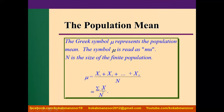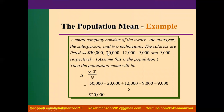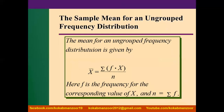For population mean, there is no change except the symbols. We use mu (μ), the Greek symbol, and capital N instead of small n. The formula is μ = Σx / N. For example, the salaries of five salespeople are 50,000, 20,000, 12,000, 9,000, and 9,000. Summing: 50 + 20 + 12 + 9 + 9 = 100,000. Divided by 5 gives us 20,000. That is how we calculate the population mean.